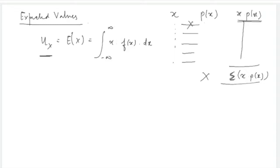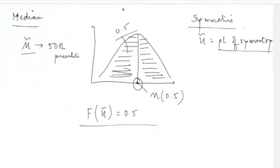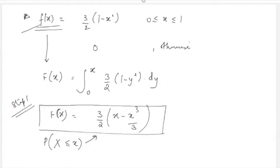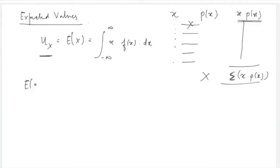We use minus infinity to infinity as limits to establish the general rule; when you know the lower and upper limits of a distribution, you replace these with those bounds. For example, for the distribution f(x) = (3/2)(1 − x²), the expected value is the integral of x·(3/2)(1 − x²) from 0 to 1.